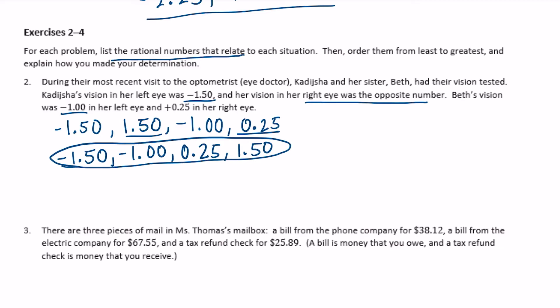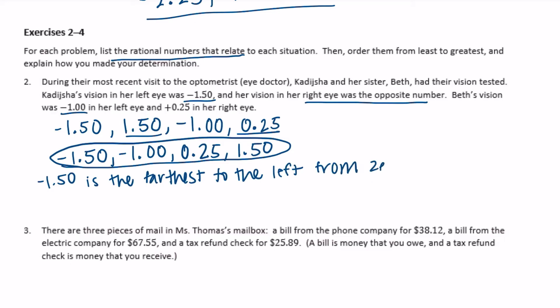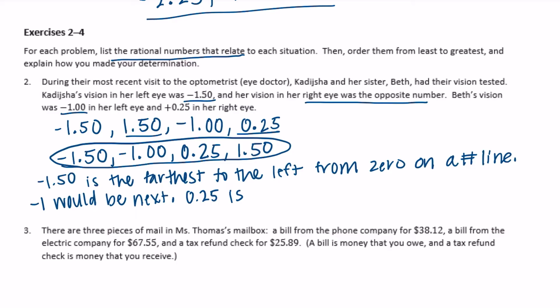And then we need to explain how we got that. Negative 1 and 50 hundredths is the farthest to the left from zero on a number line. Negative 1 would be next. And 25 hundredths is smaller than 1 and 50 hundredths because it is closer to zero.